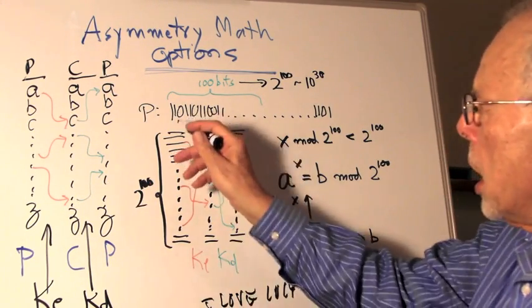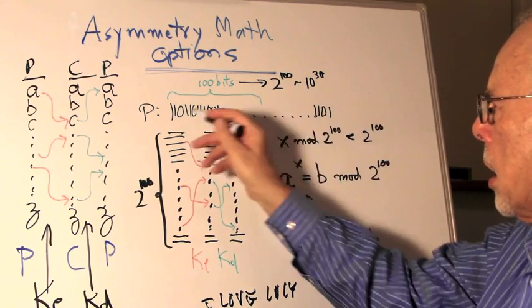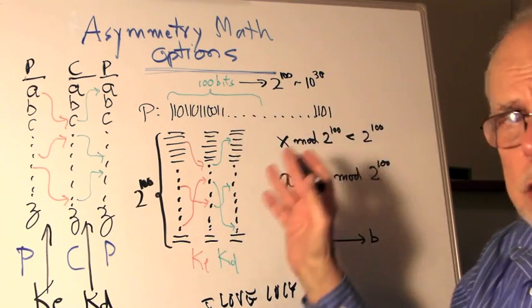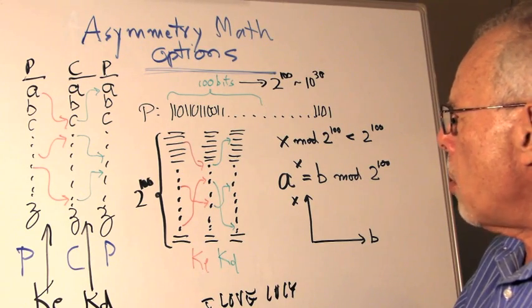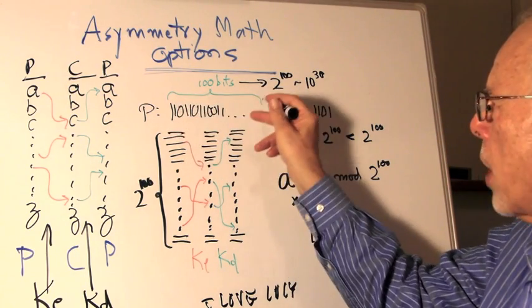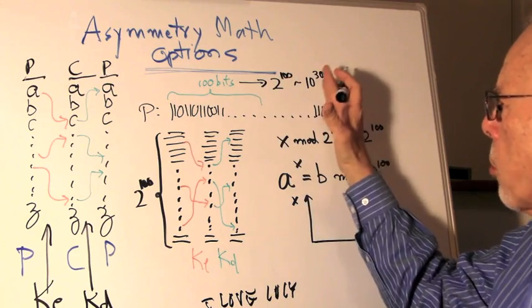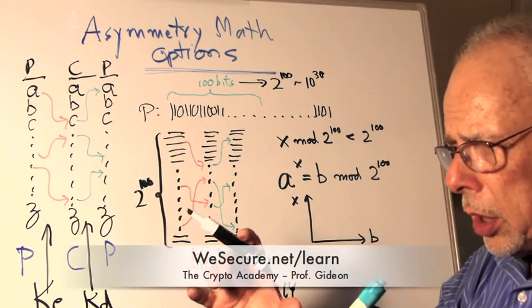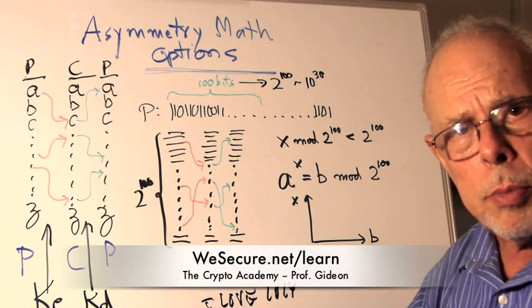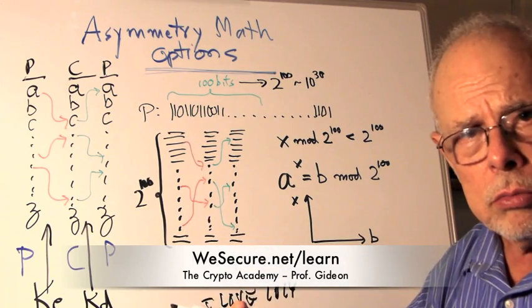Now, how does it work? Here is the plain text. It's a series of ones and zeros. We represent everything in a binary way. How about we take a chunk of 100 bits and then another 100 bits and then another 100 bits and refer to every combination of 100 bits as a letter, as an item.